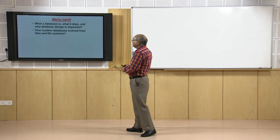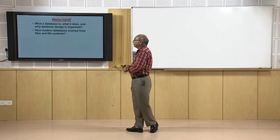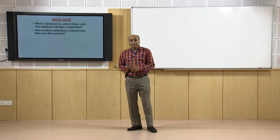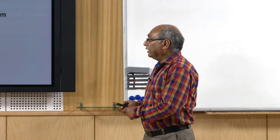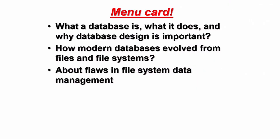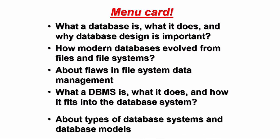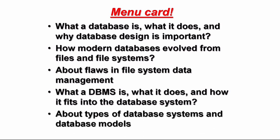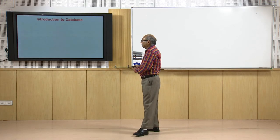We will also discuss how modern databases evolved from files and file systems, because when computers started, we were keeping things in file systems. Still many people keep data in file systems, but not in GIS. We will cover the flaws — the disadvantages and demerits of file systems — the advantages of DBMS, and also the different types of databases which have been implemented in GIS.